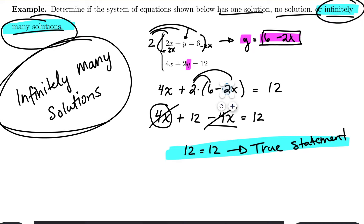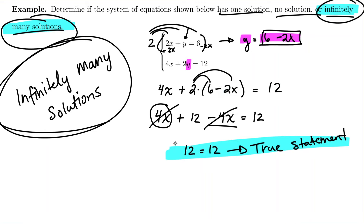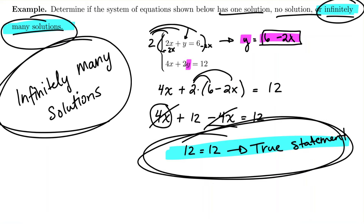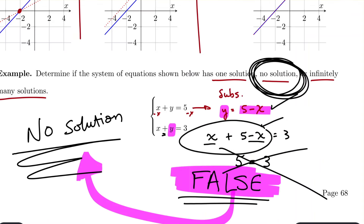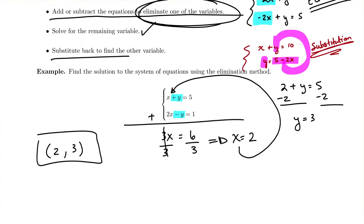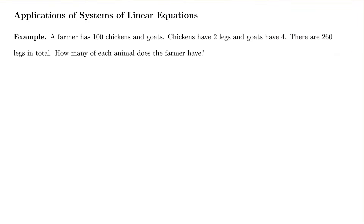In summary: if solving a system yields a true statement with no variables remaining, there are infinitely many solutions. If you get a false numerical equation, there is no solution. If you find a specific x and y value, there is exactly one solution.